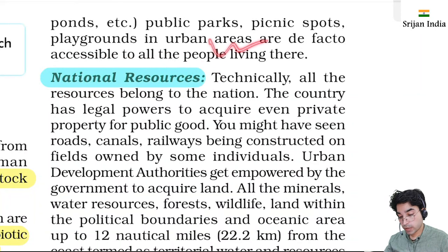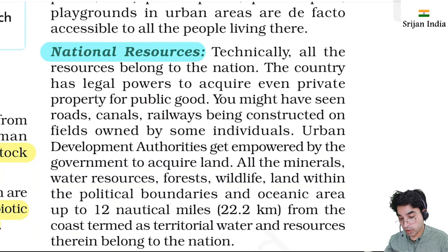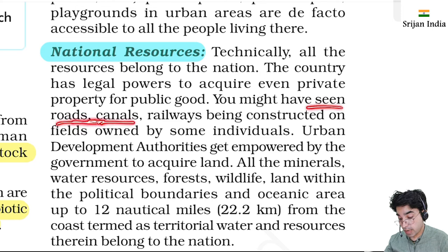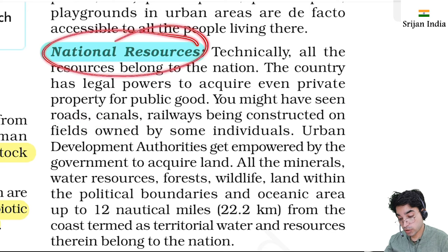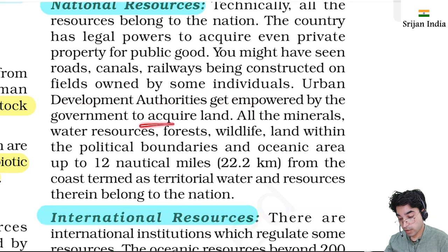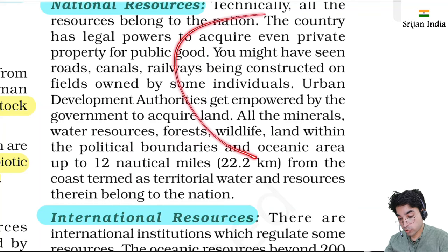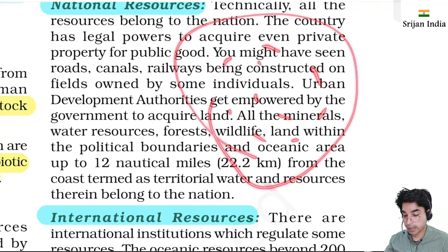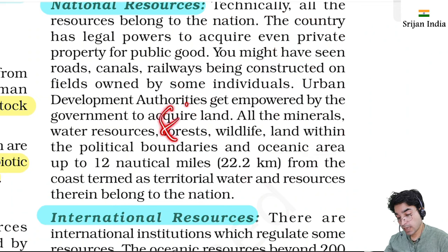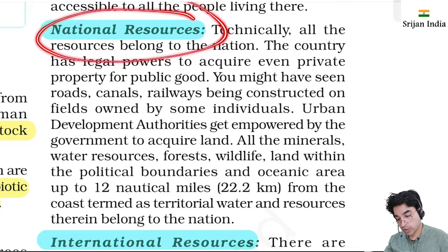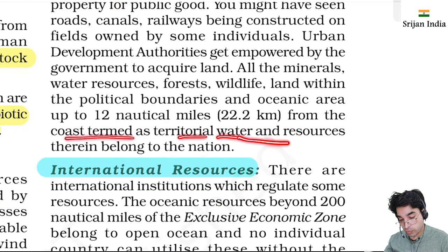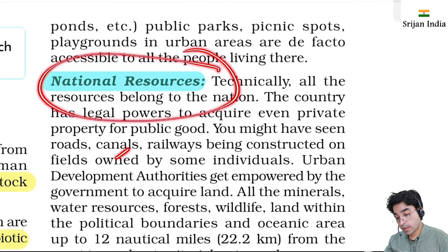National resources are owned by the country. Technically all resources belong to the nation. The country has legal power to acquire even private property for public good. Roads, national highways, state highways, canals, railways - these are public property and national resources. All mineral and water resources, forests, wildlife, land within the political boundary of India - all belong to the Indian government. The oceanic area up to 12 nautical miles is the exclusive economic zone.